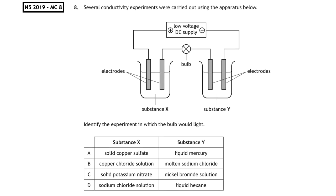This past paper question is from the National 5, 2019, multiple choice 8. Several conductivity experiments were carried out using the apparatus below. Identify the experiment in which the light bulb would light. Looking at substance X, we can see we've got a solid salt, copper sulfate. Solid ionic substances cannot conduct because the ions are not free to move, which means A and C cannot be the correct answer. In B and D for substance X, they both end in solution. Solution ends in the word ion, which means they have ions which are free to move throughout the solution. So potential answers could be B or D.